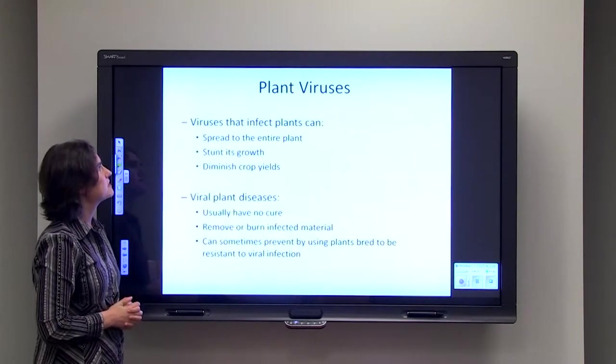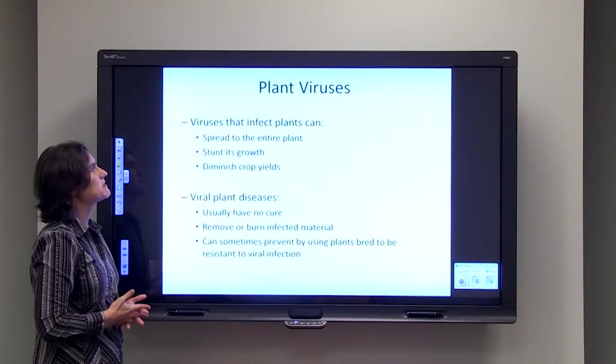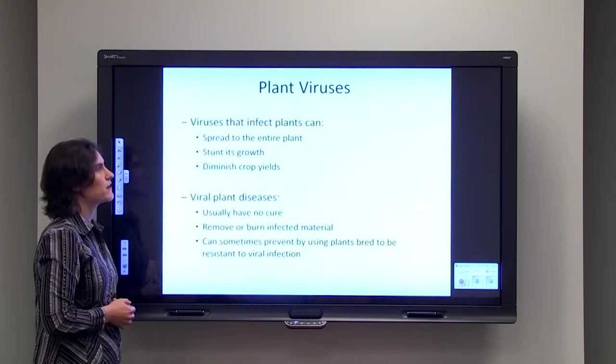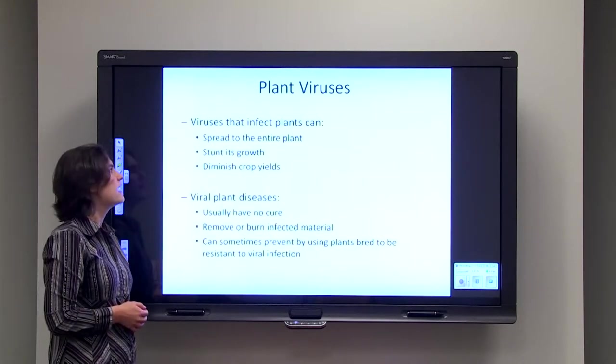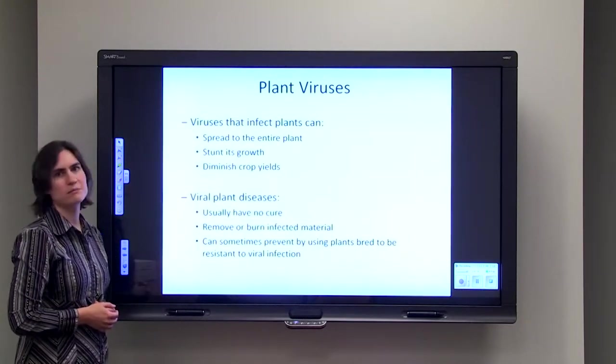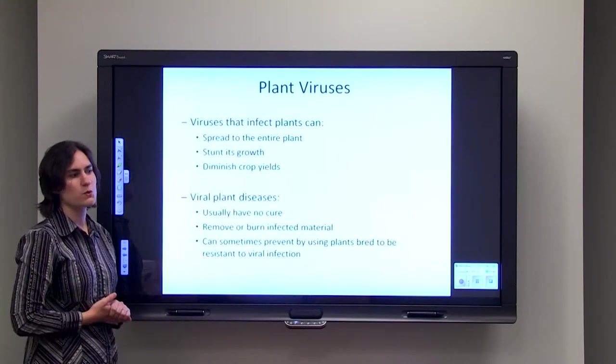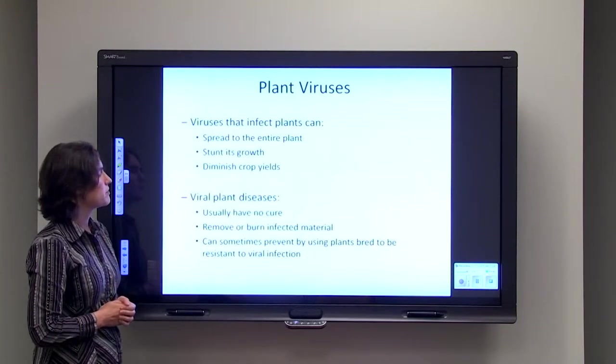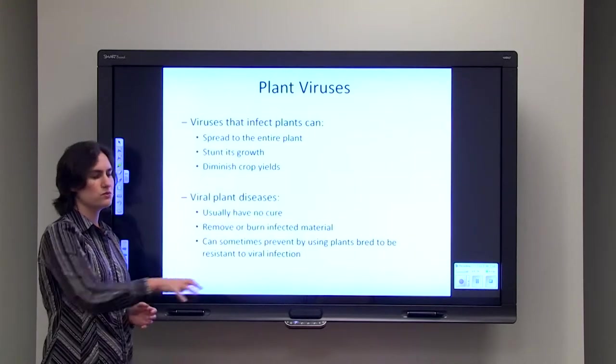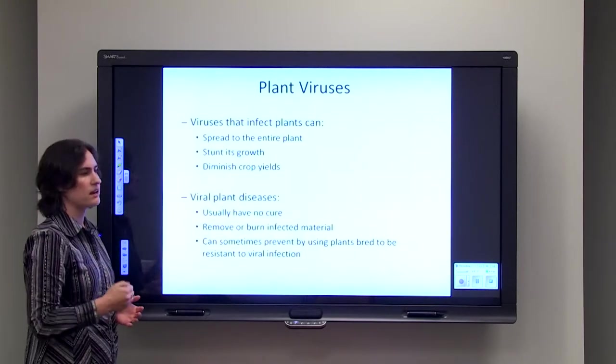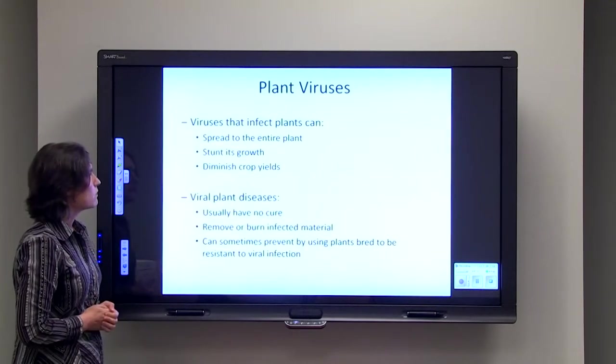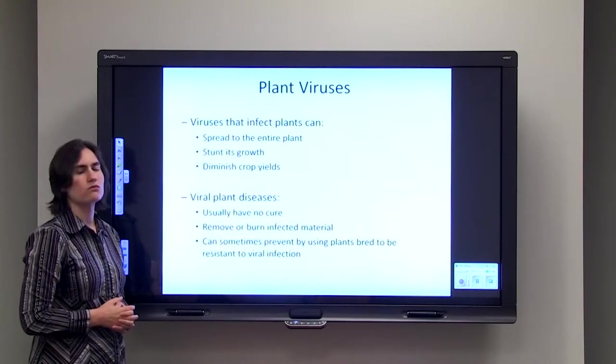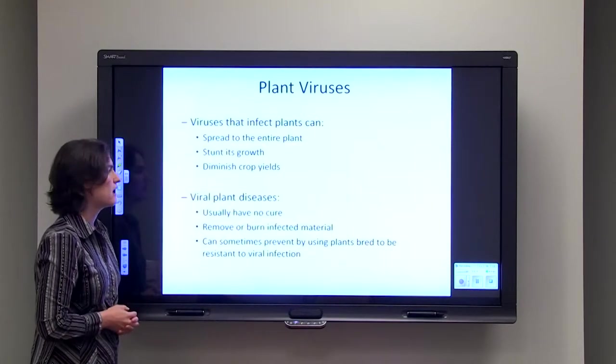In addition to bacterial viruses, we can have plant viruses. These viruses can sometimes infect the entire plant—leaf to stem to root—and these viruses can stunt the growth of the plants and diminish crop yields. This is very bad for farmers or if you do gardening. The downside of these viral plant diseases is they often have no cure, so the only thing that you can do is pull those plants out of the ground and either throw them away or set them on fire. If you want to avoid having a virus infection of your plants, you can buy plants that are resistant to viruses and use that in your garden instead.